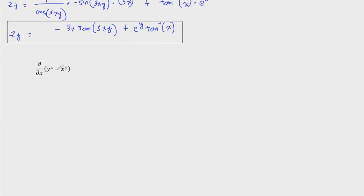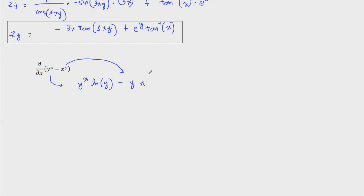Next, expressed using curly d notation, we differentiate with respect to x. Inspecting the first term: y to the x — treating y as constant, this is an exponential with constant base, so the derivative is y to the x times ln(y). For the next term, x to the y — treating y as constant, this is a power rule, giving minus y times x to the y minus 1. The final answer can be written as y to the x times ln(y) minus y times x to the y all over x.